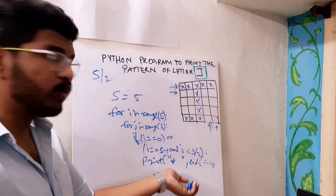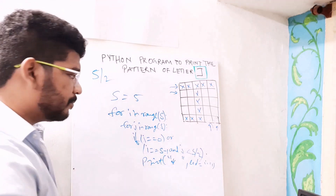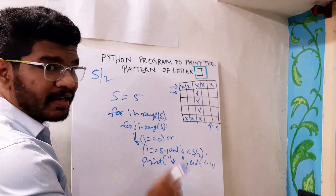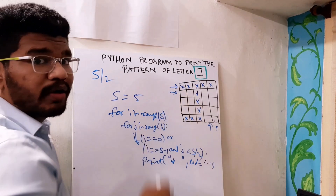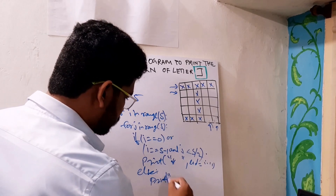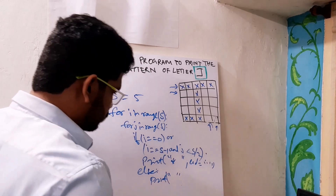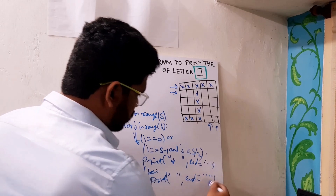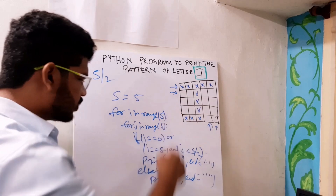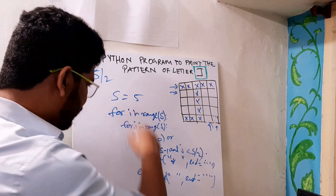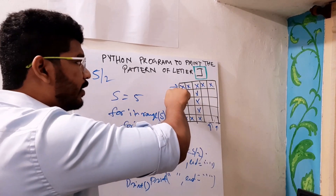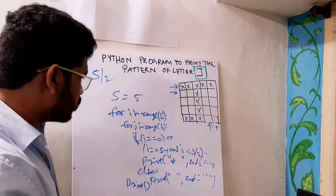If you follow the previous programs, you will know why I am giving end as space. But if not — print takes end as next line by default, so as soon as you print a star, you go to the next line. But here we want to stay on the same line, so it ends as space or empty and won't go to the next line. In the else condition, I just need to print spaces. After the inner for loop, I need to also print an empty print so it goes to the next line after completing the whole row. That is the full explanation — hope you understood.